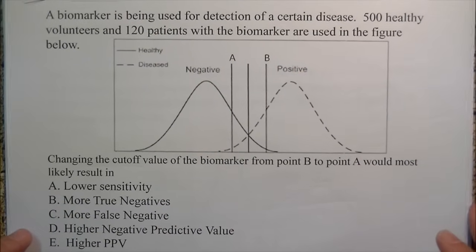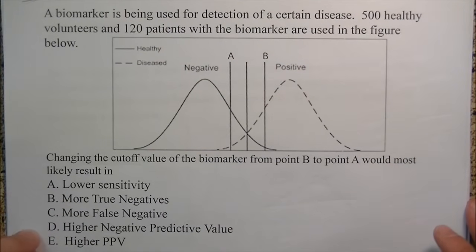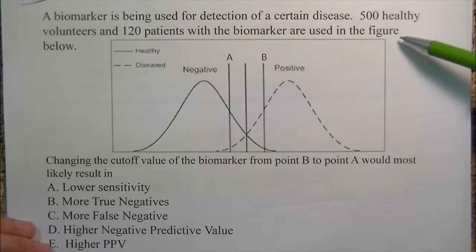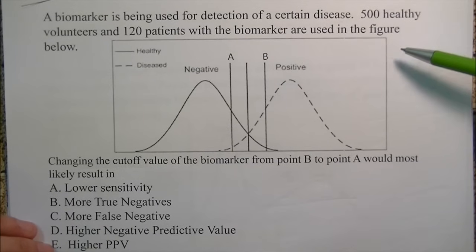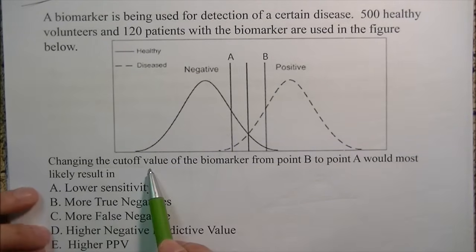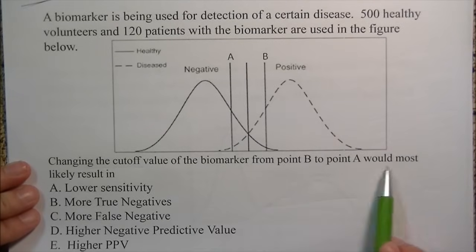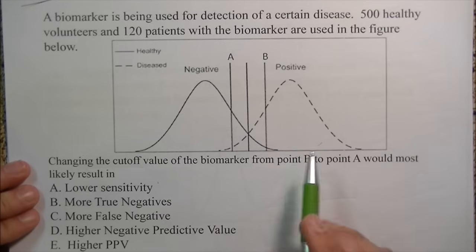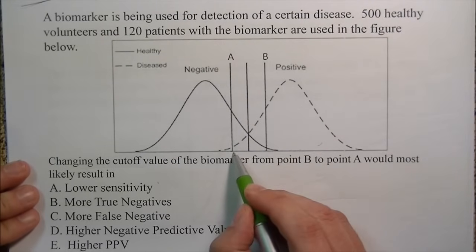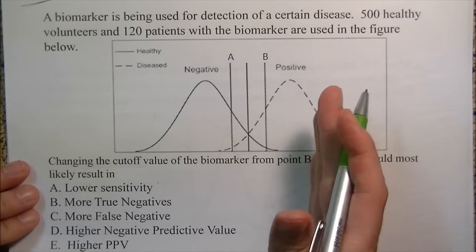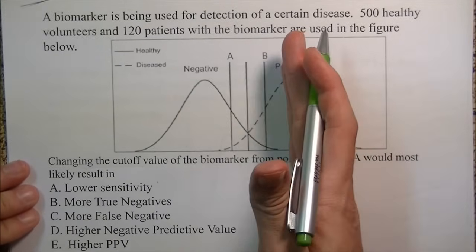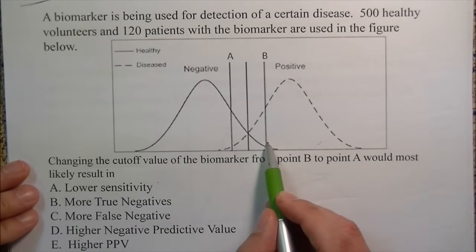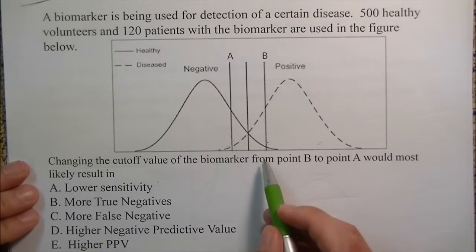A biomarker is being used for detection of a certain disease. 500 healthy volunteers and 120 patients with the biomarker are used. Changing the cutoff value from point B to point A would most likely result in what? They'll give you some type of chart and move the marker from A to B or B to A, or just change the cutoff numerically. The question is: are you moving left or right?